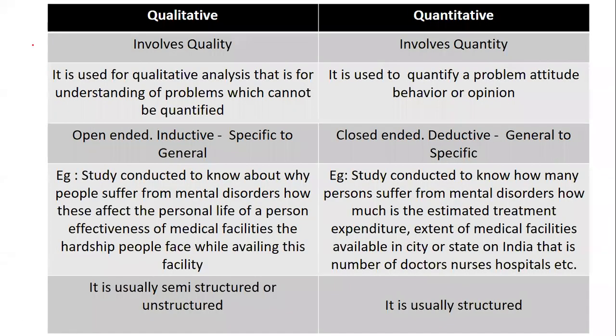Now coming to a very important topic: qualitative and quantitative research. Qualitative research involves quality — that is, understanding problems which cannot be quantified. It is open-ended and uses an inductive approach, that is specific to general. There was a question about inductive-deductive approach, so you should know that in qualitative research we have an inductive approach, whereas quantitative research comes with a deductive approach using close-ended questions. I have given an example for you to understand, with the same topic approached from both qualitative and quantitative angles.